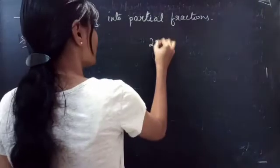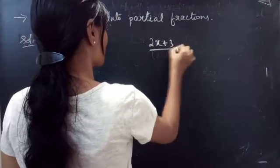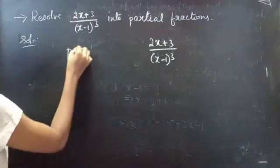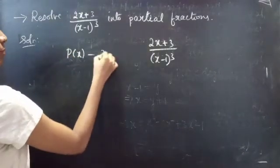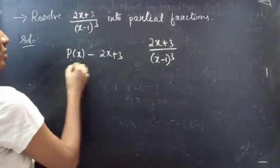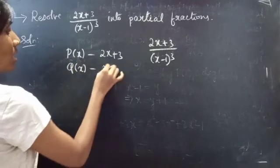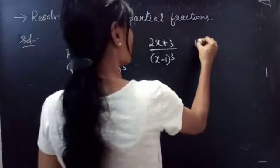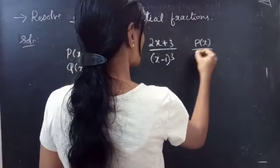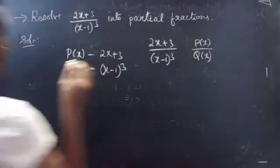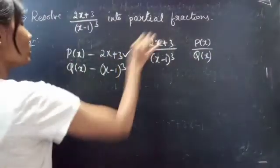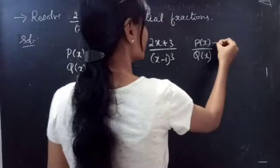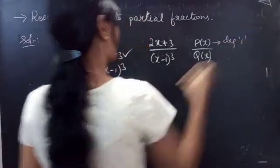We are given the fraction (2x + 3) / (x - 1)³. Let p(x) = 2x + 3 and q(x) = (x - 1)³. We are considering the fraction as p(x) / q(x). Clearly, the degree of p(x) is 1.